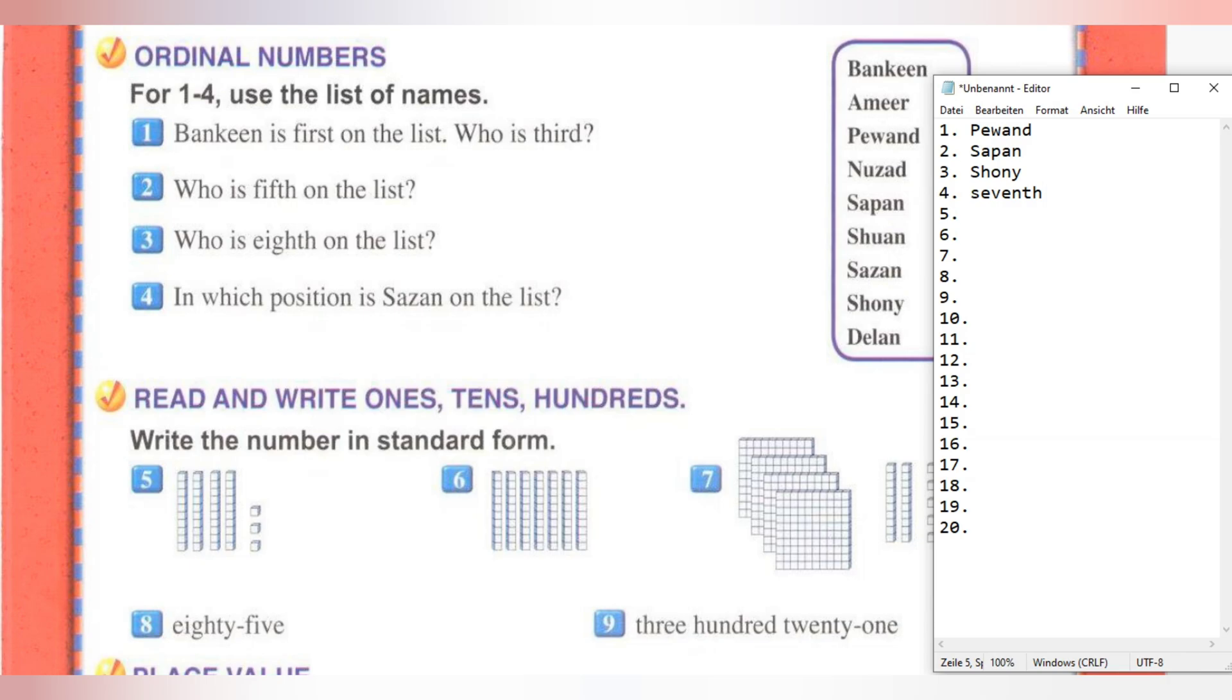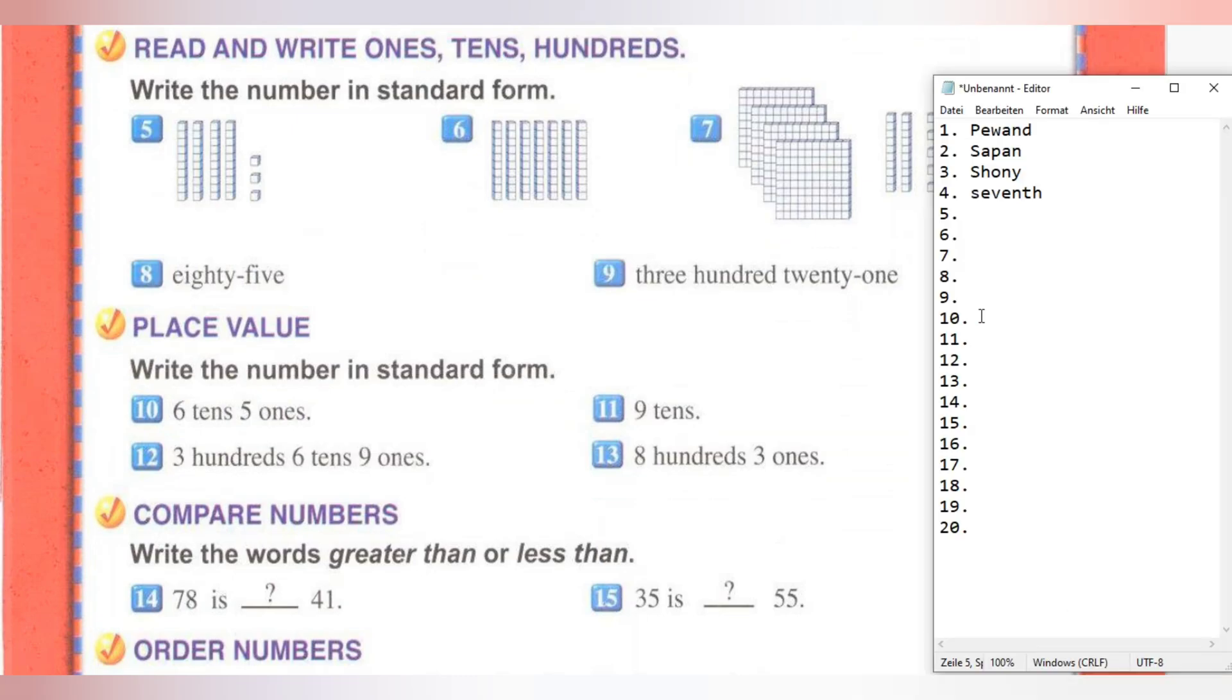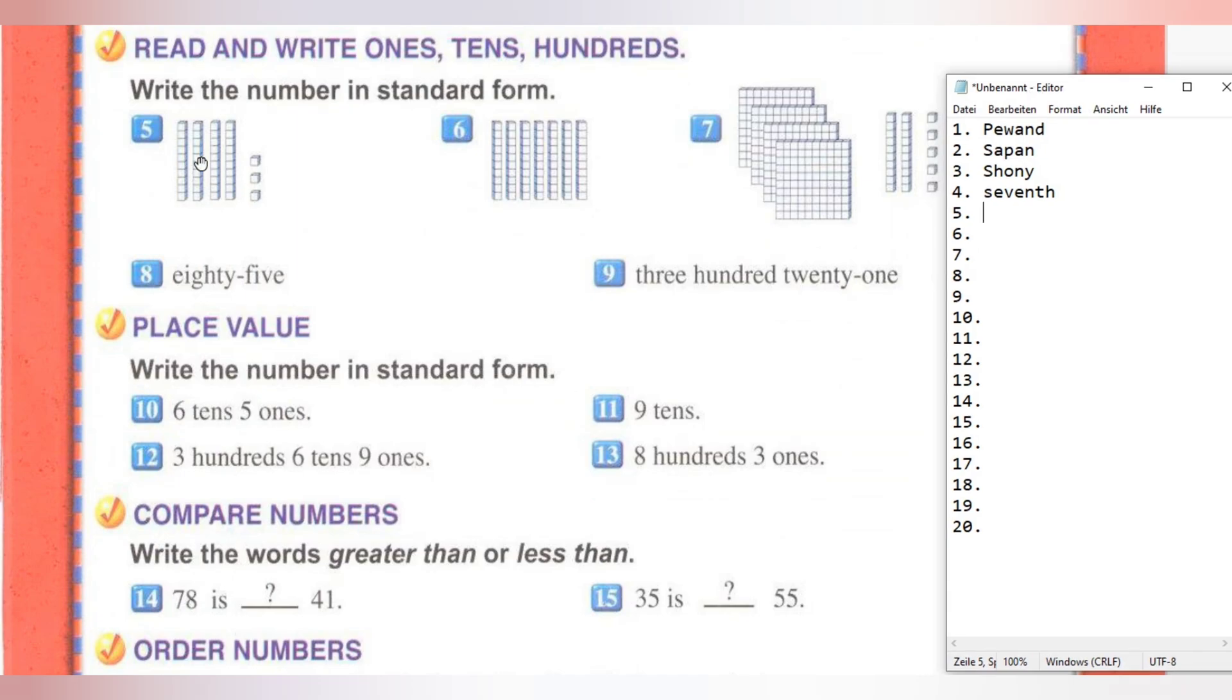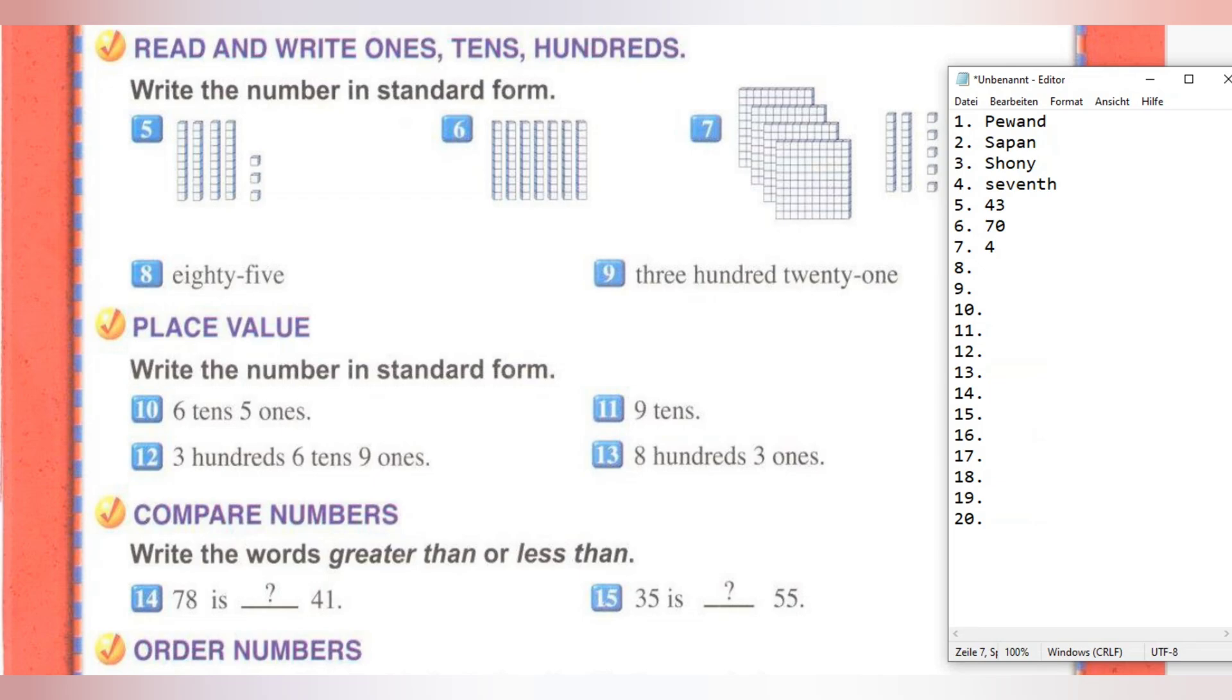We are finished with ordinal numbers. Next: Read and Write Ones, Tens, Hundreds. Write the number in standard form. We have four tens and three ones, which means 43. Question number seven, we must be careful and calculate all together. We have four hundred, twenty, and five ones: 425.